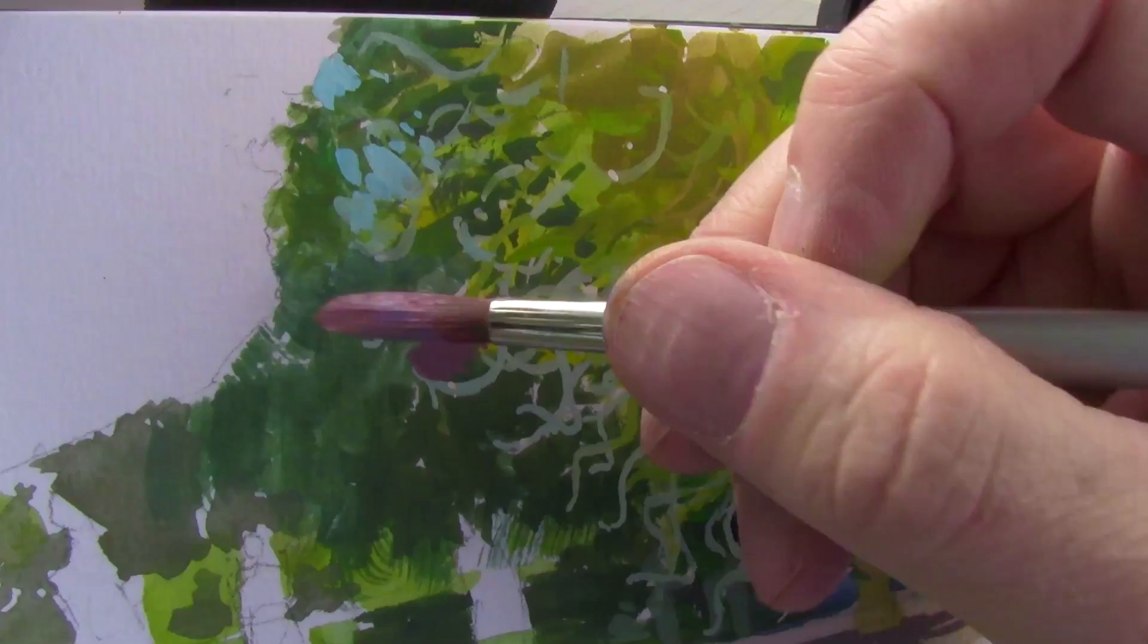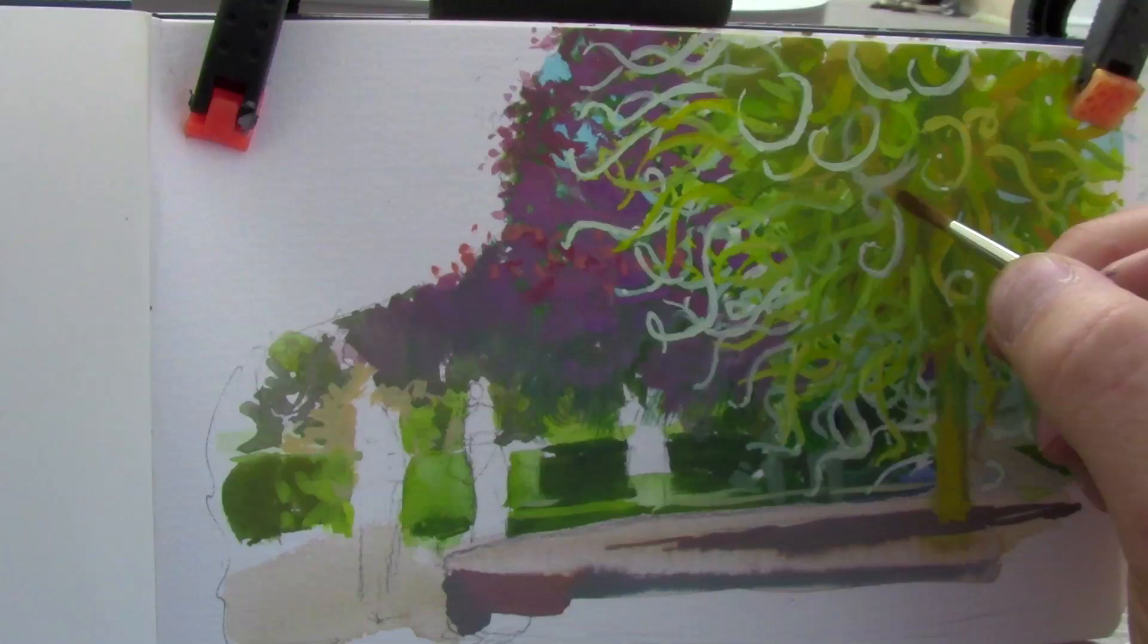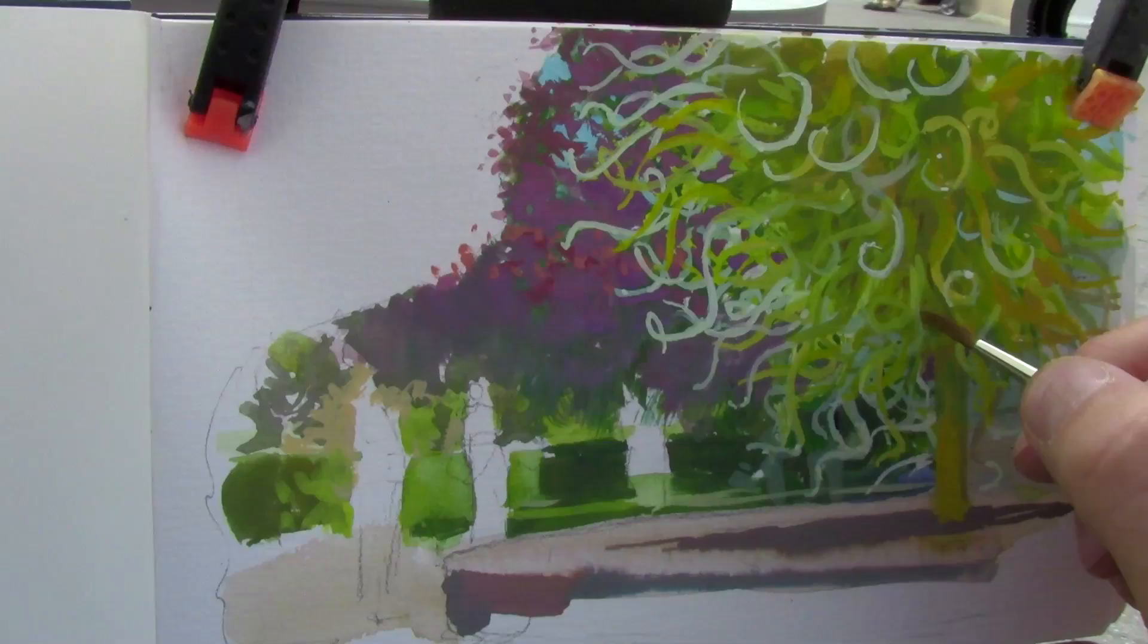So I mix up a color and since this is gouache, it'll cover over the green. And I paint a little past all the edges of the tendrils and then come back and paint them again.